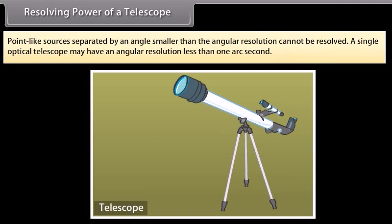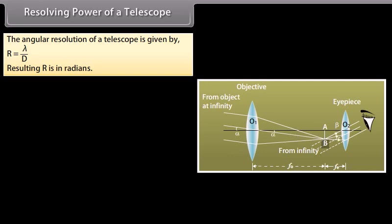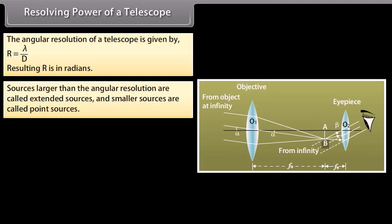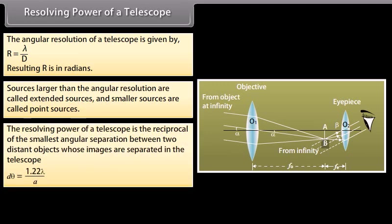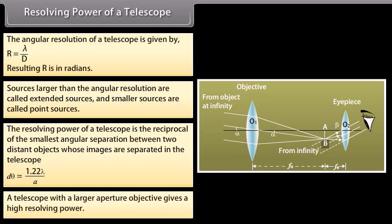Resolving power of a telescope: Point-like sources separated by an angle smaller than the angular resolution cannot be resolved. A single optical telescope may have an angular resolution less than one arc second. The angular resolution of a telescope is given by R = λ/D, where λ is the wavelength of the observed radiation and D is the diameter of the telescope's objective, with R in radians. Sources larger than the angular resolution are called extended sources, and smaller sources are called point sources. The resolving power of a telescope is the reciprocal of the smallest angular separation: Dθ = 1.22λ/A. A telescope with a larger aperture objective gives higher resolving power.